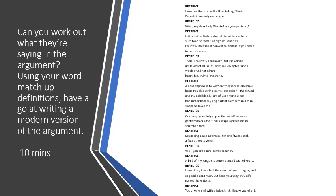Now I'm going to read this to you — I'll also be attaching this extract from Act One Scene One to Class Charts for you to annotate. Can you work out what they're saying in the argument using your word match-up definitions from the previous slide? Have a go at writing a modern version of the argument. I'll give you ten minutes to do that. If we were in class, we'd be acting this out — I wonder who would be Beatrice and who would be Benedict.